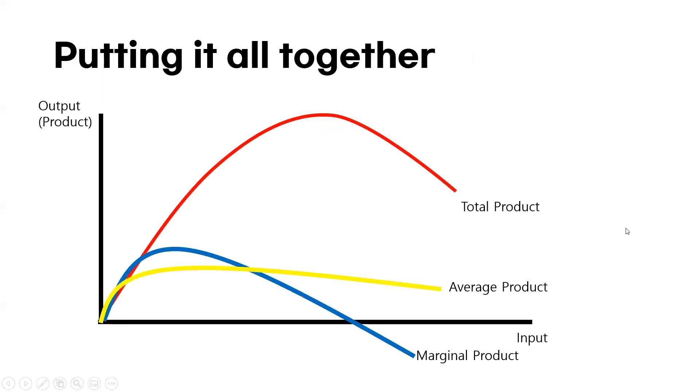Now, putting in all together these concepts. So, we have talked about products, returns, inputs, outputs, and more. What you see here is the graph of three types of products, total product, average product, and marginal product.